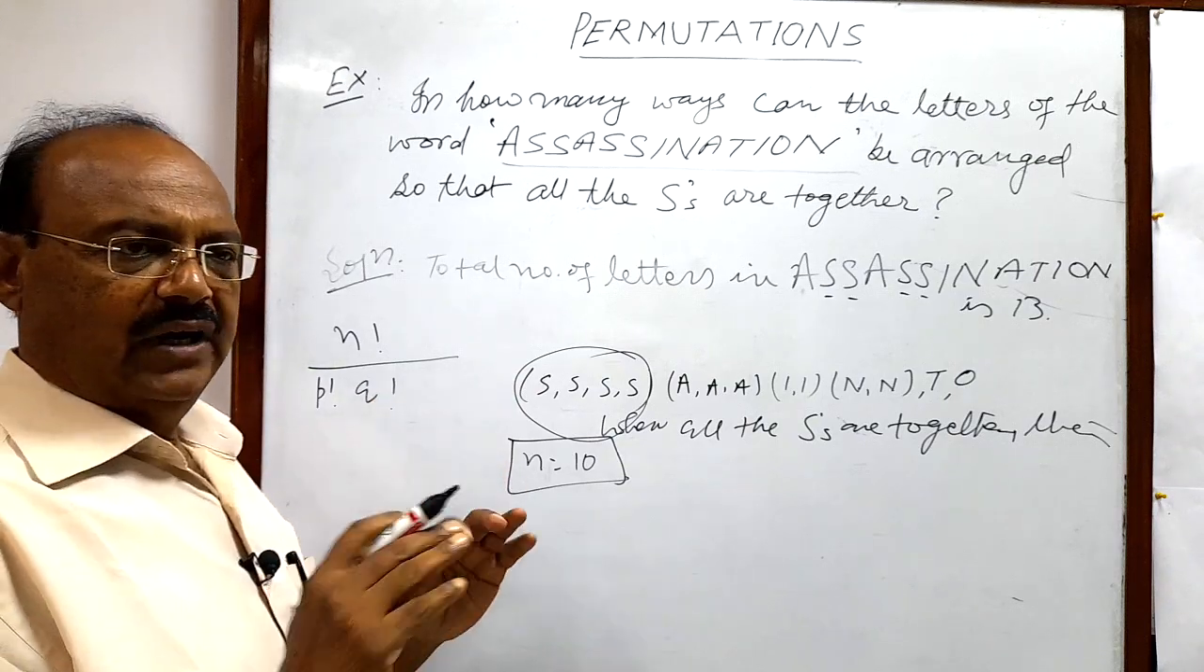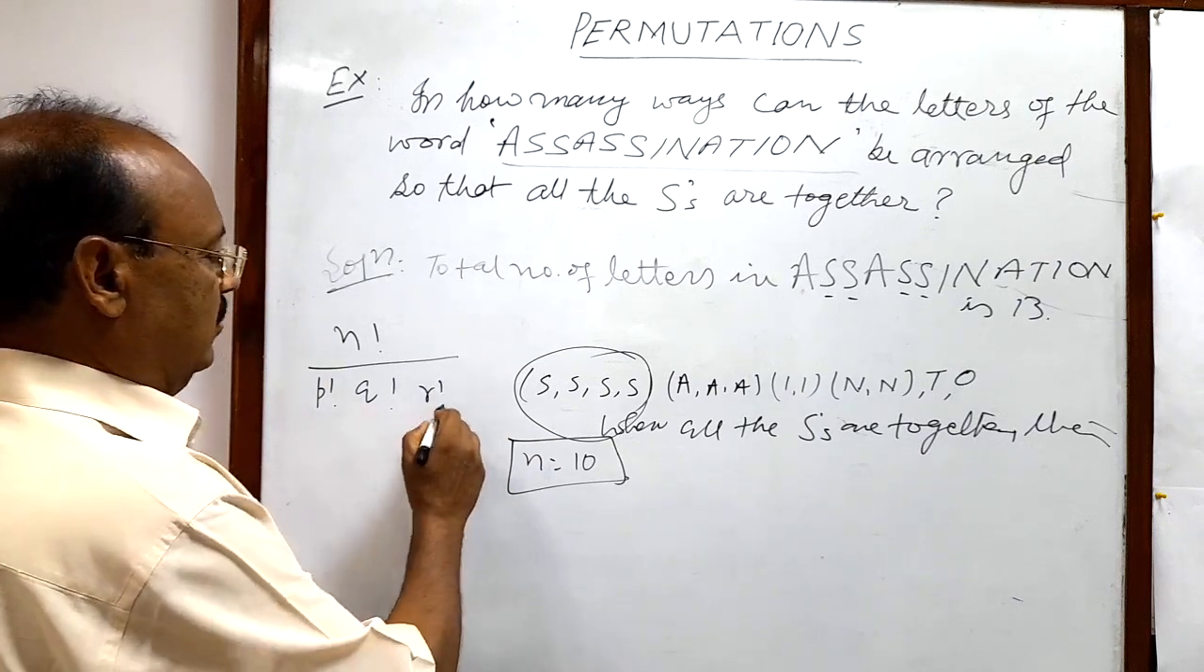As for example, if number of one type of letters is p, then p factorial. Another type of letters q numbers, then q factorial. Again number of another type same alike of another type of letters is r, then r factorials.